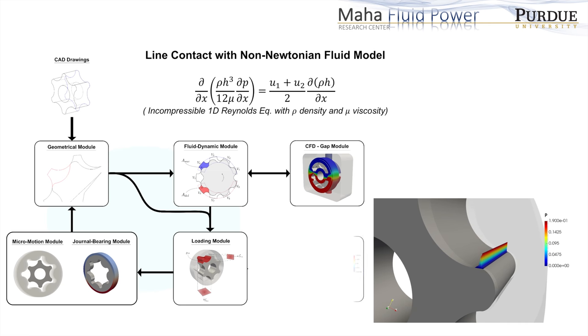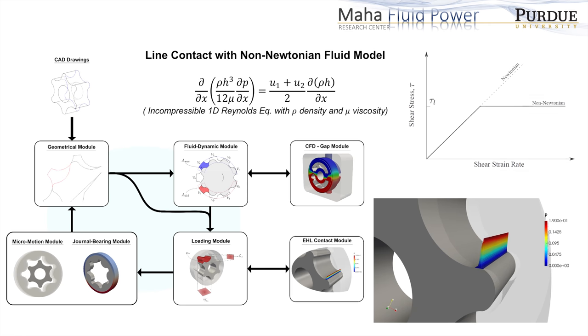Finally, an advanced line EHL model, including non-Newtonian fluid behavior, is implemented. The model is used to calculate the friction coefficient between the gears for the prediction of the mechanical losses in the contact interface.